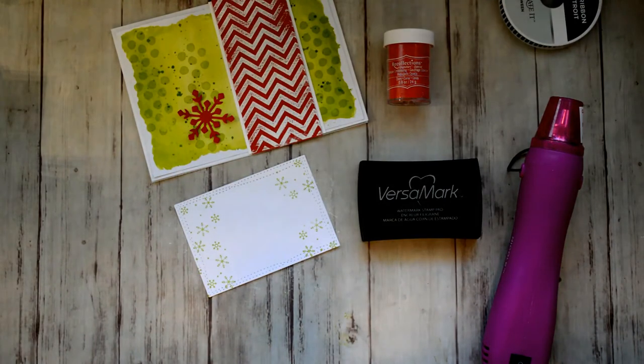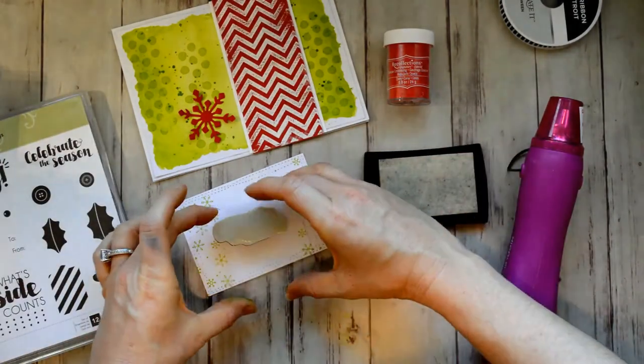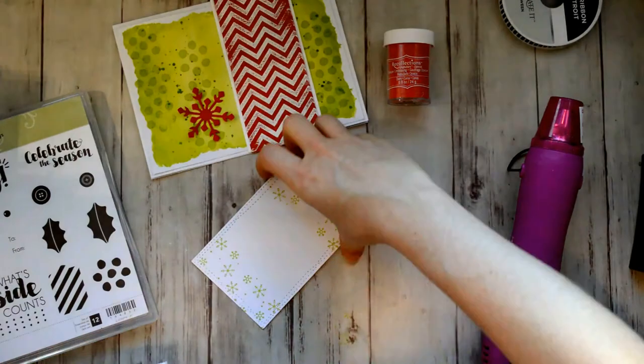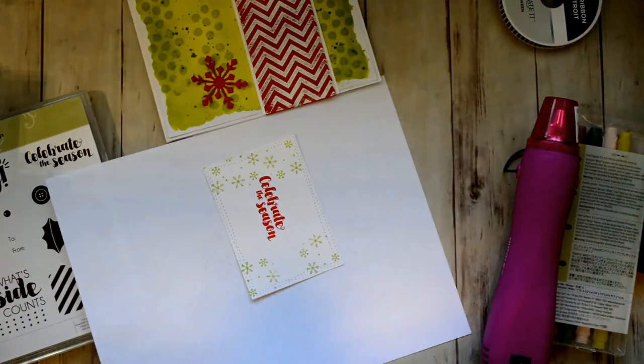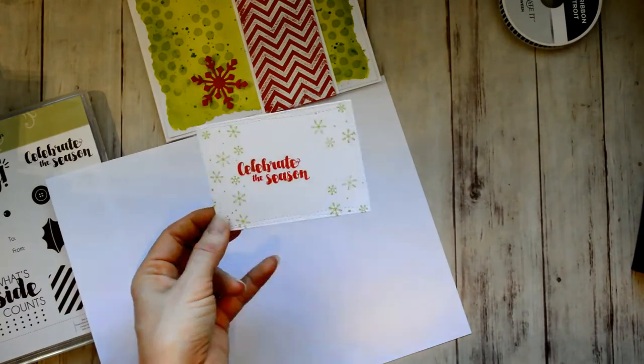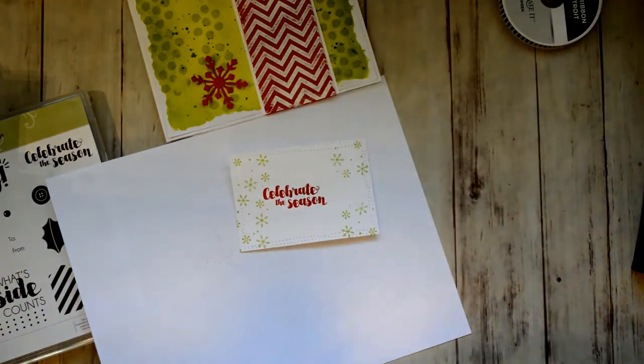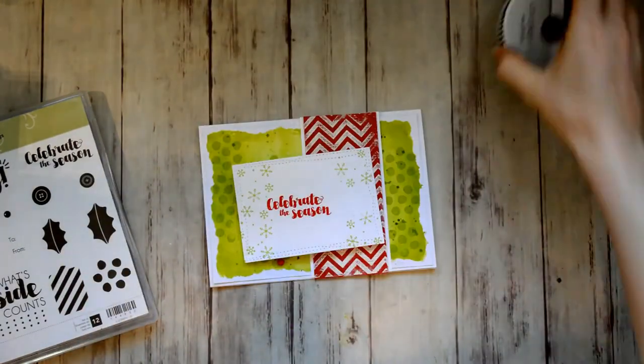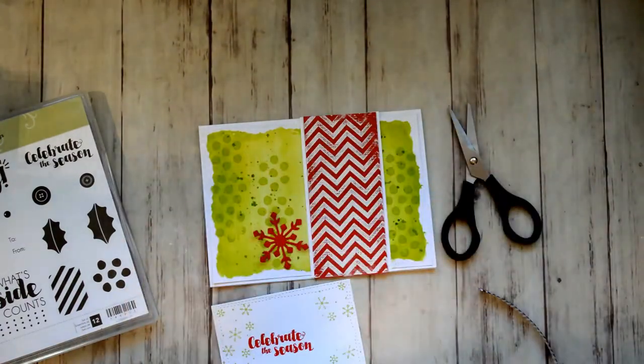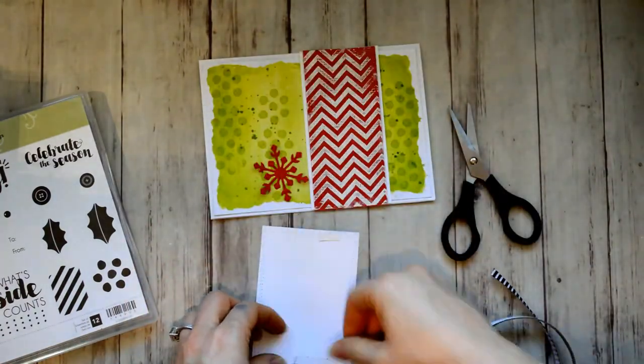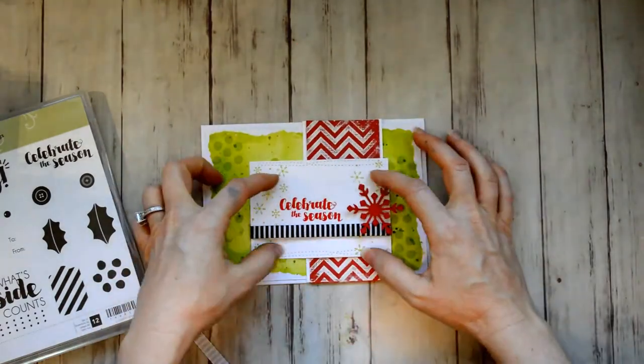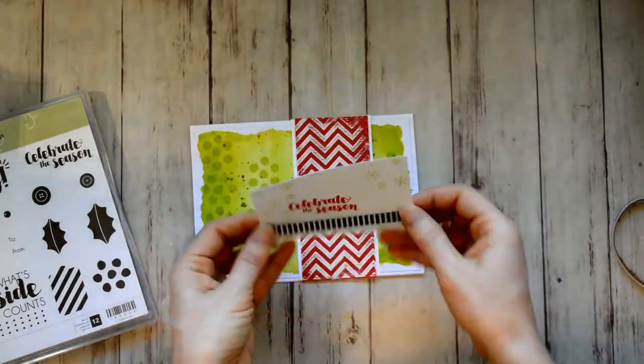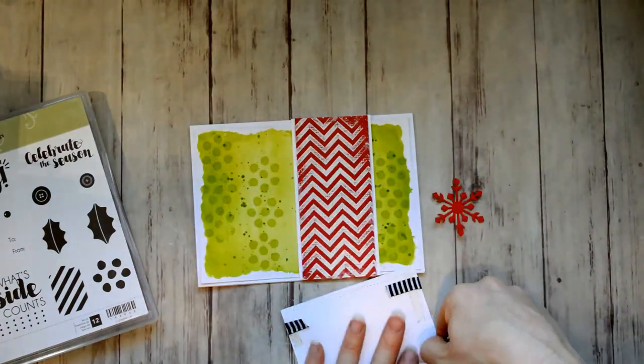And I had trouble with this card. And the reason is because it was 5x7. And the Celebrate the Season Sentiment is a good size for the A2 size card, which is 4.25x5.5. But it's a little too small for this 5x7 card that I've got. And so I was trying to make the sentiment look right.